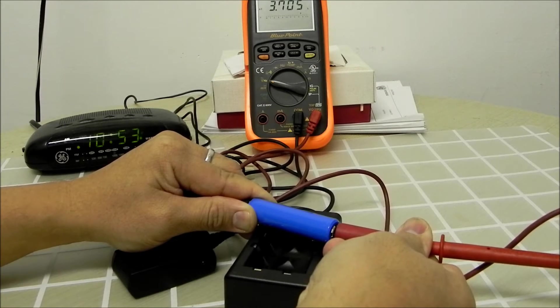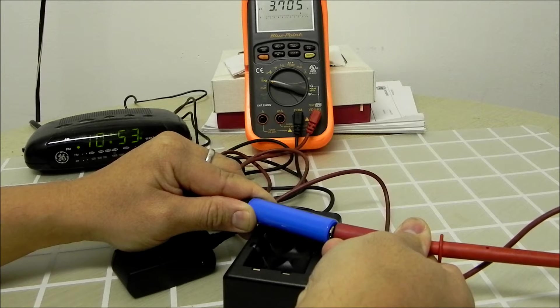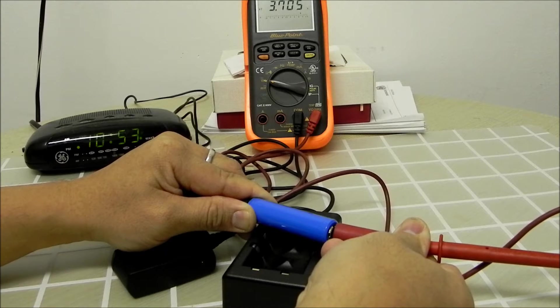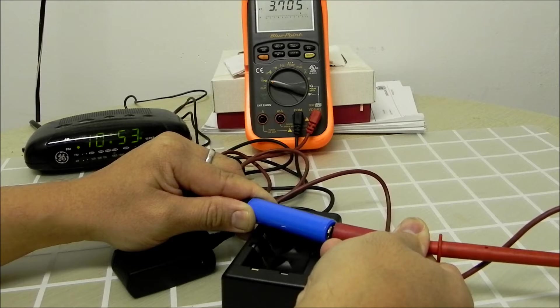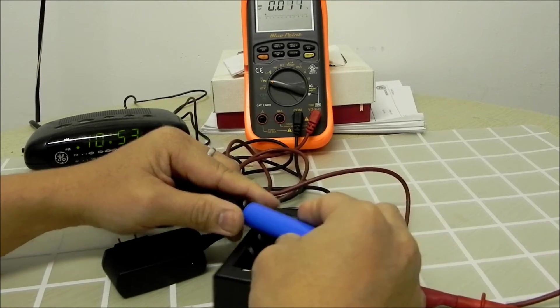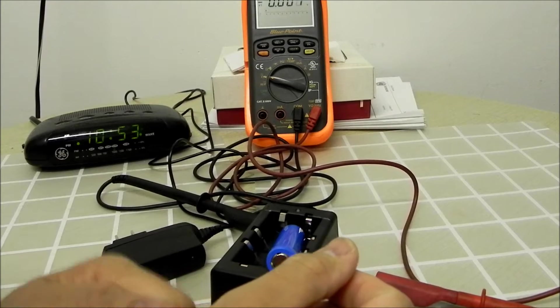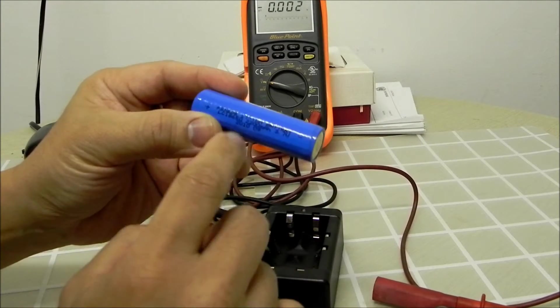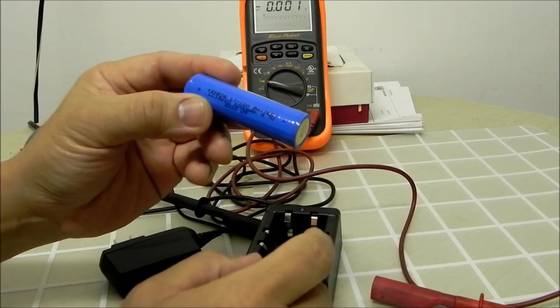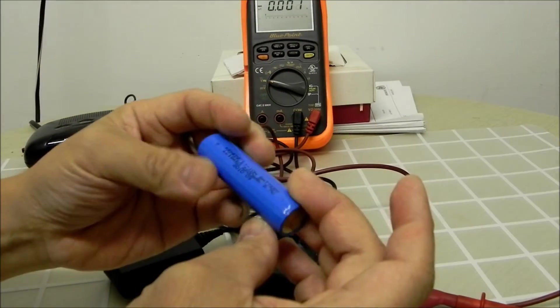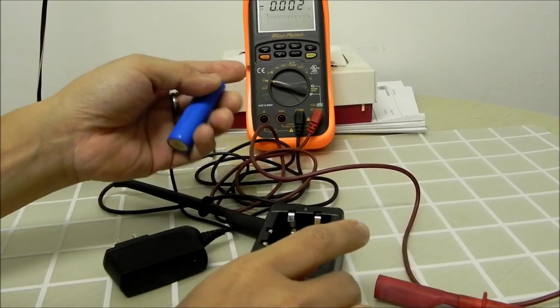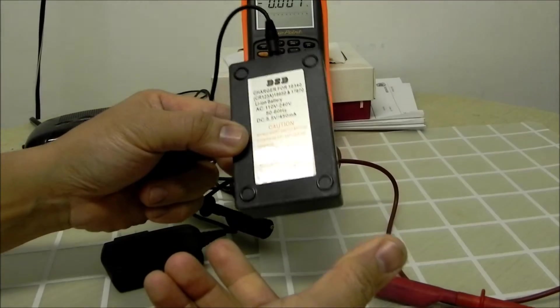Right now, it's at 3.50. The charge, it's not fully charged, it's only about midway charge. And, we started at 3.4 volts. Like I said, this is a lithium-ion battery, just a generic battery. And, this is my DSD charger.